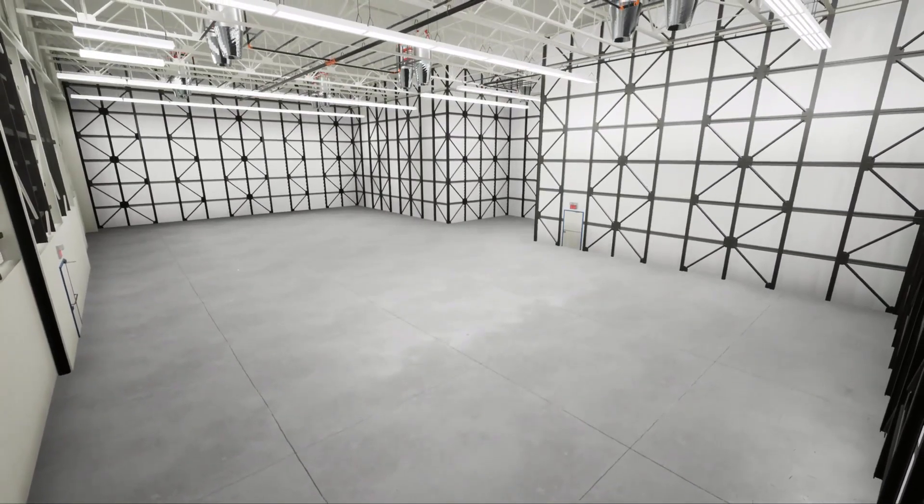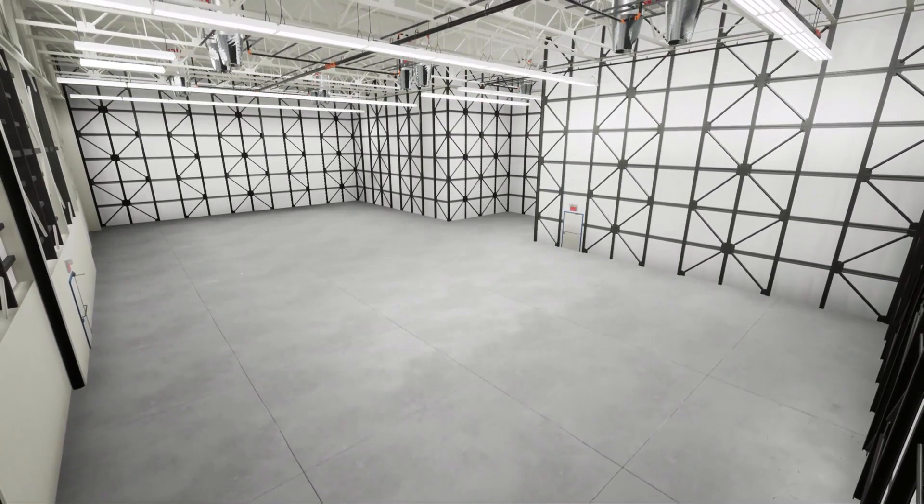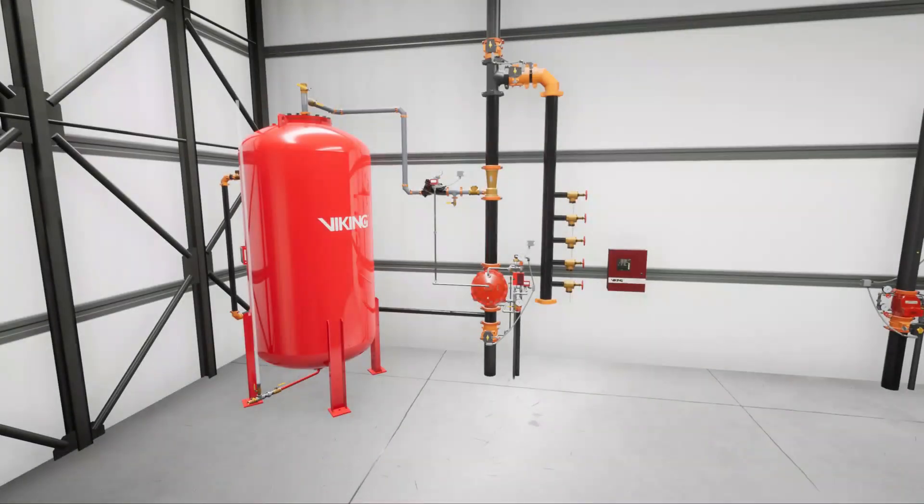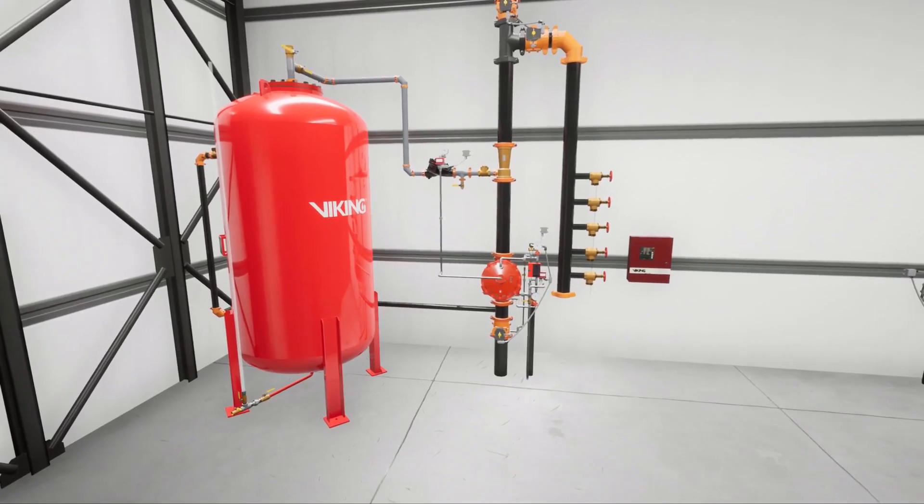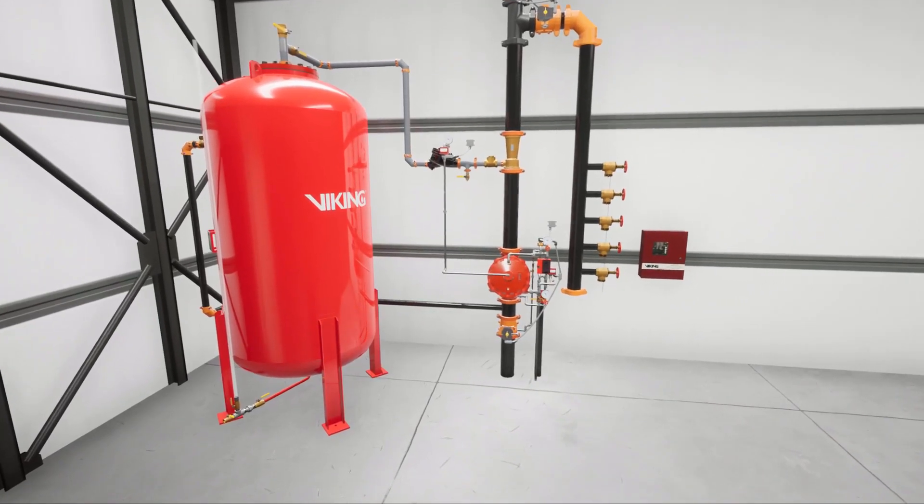In this scenario, we are looking at a Group 2 aircraft hangar. The hangar is protected with an electric release deluge foam system supplied by a bladder tank.